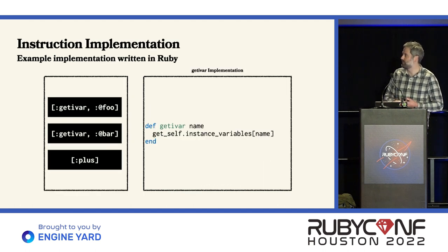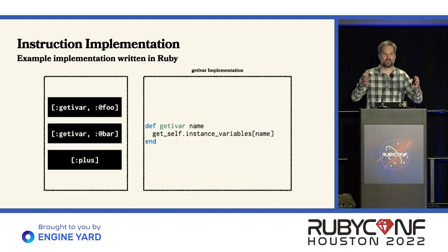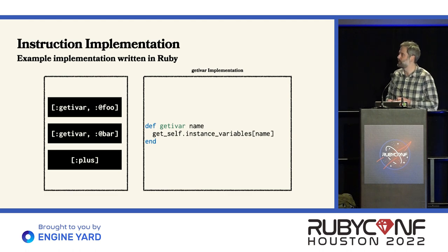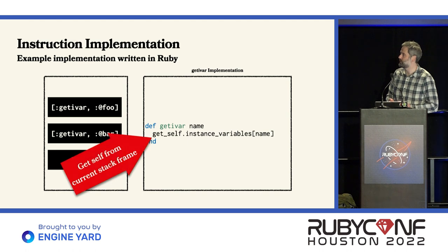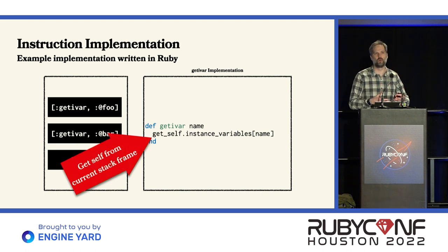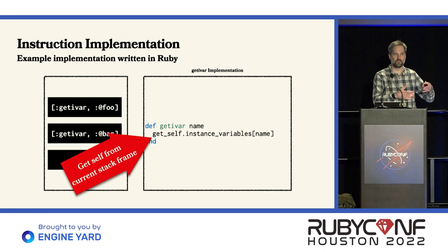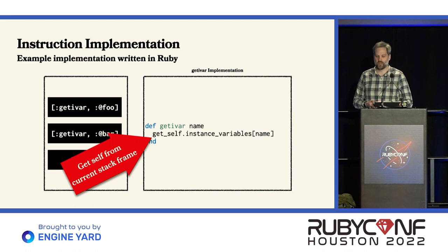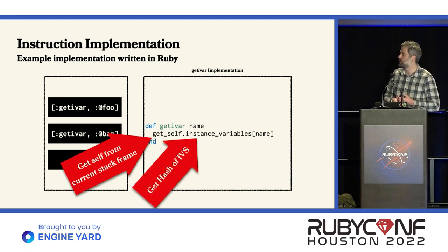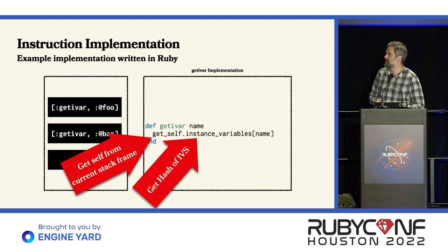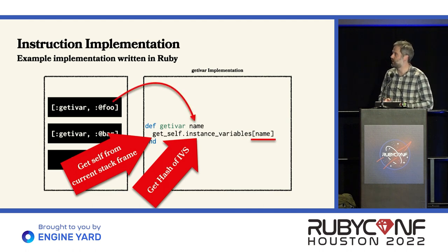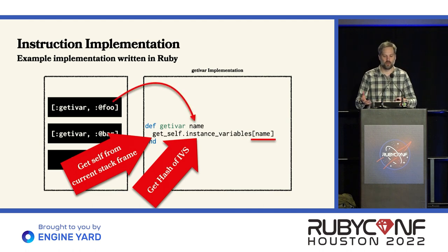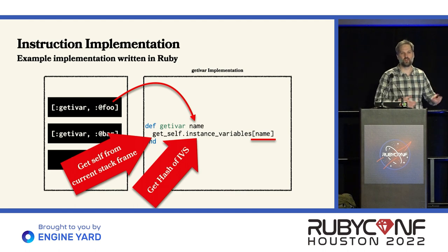If we were implementing this virtual machine, we can imagine how one might implement the getIvar instruction. It would be pretty simple — just maybe a method like this where we take the name from the instruction as a parameter. The first thing I'm going to do is look up self — what is the object that we're operating on? Self is going to be stored in the current frame. Then we say, get the hash table of instance variables, and then look up that value by name from the hash table, and push that value onto the stack. Pretty easy to imagine going from the tree-walking interpreter into the virtual machine implementation.